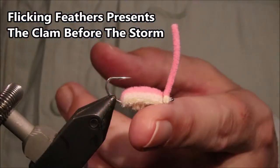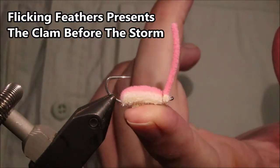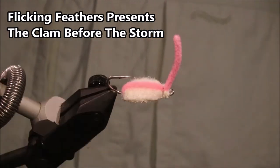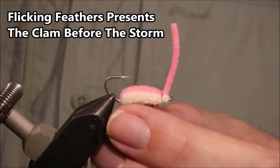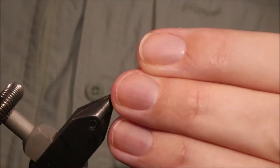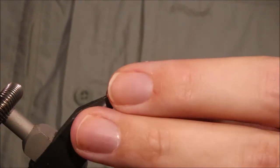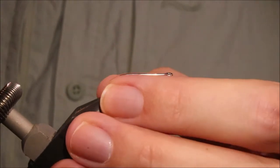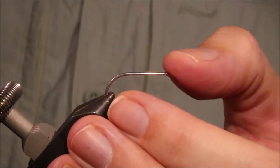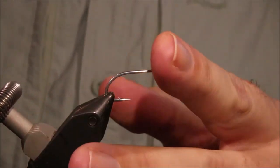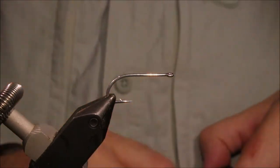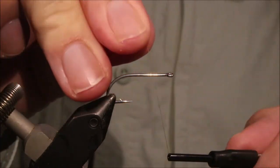Hi everybody, Martin at Flicking Feathers again today. I'm tying the Clam Before the Storm by Craig Matthews, the guy that came up with the bonefish bitters. It's supposed to imitate a clam in the sand, feeding with its siphon out, although my suspicion is the bonefish probably eat it as a worm.